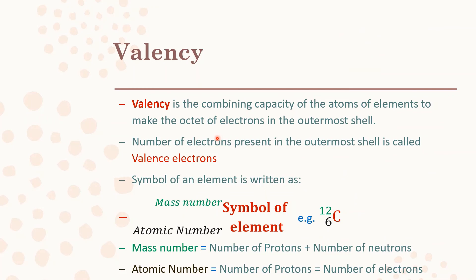The number of electrons gained, lost, or shared to achieve an octet (8 electrons in the outermost shell) gives us the valency of the element. For example, lithium has atomic number 3 — distribution is 2 in K and 1 in L shell. The atom loses this 1 outermost electron to become stable, so valency is 1. Similarly, sodium has atomic number 11 with 1 electron in the outermost shell, loses it to become stable — valency is 1. All Group 1 elements have a valency of 1.